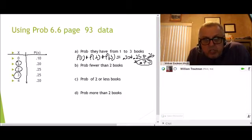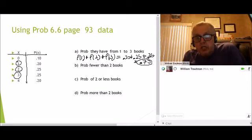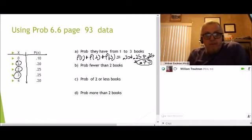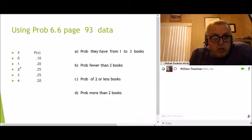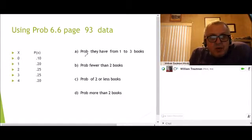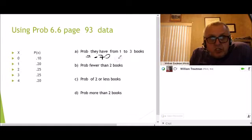So the probability of walking into a bookstore and buying from one to three books is 0.70. The answer was 0.70 — we added one, two, and three, which is 0.2 plus 0.25 plus 0.25.